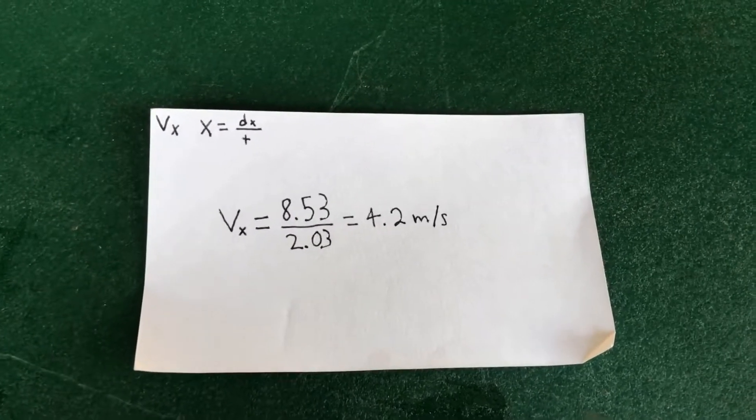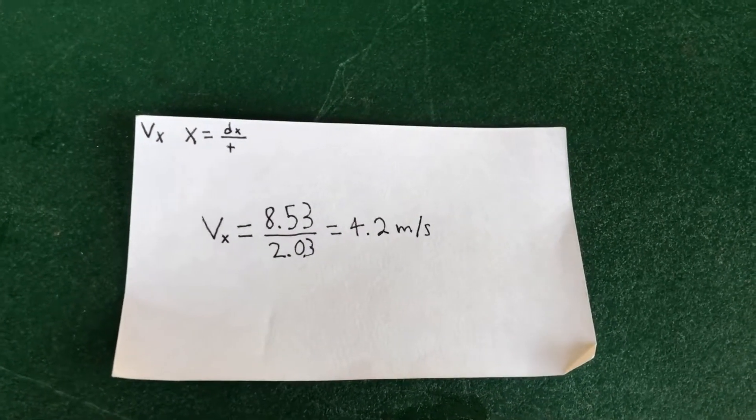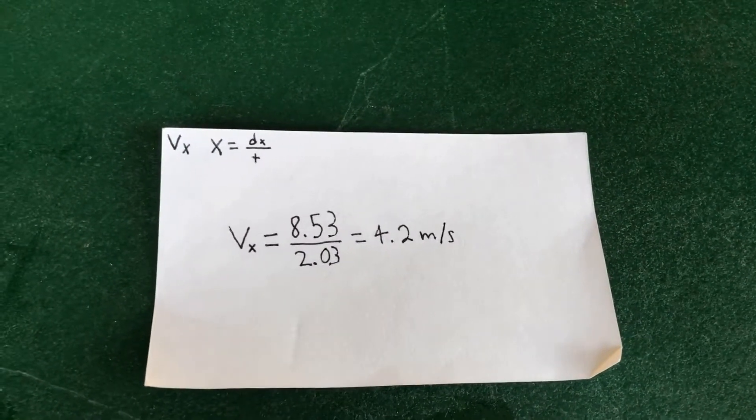To find horizontal velocity, we used the equation distance over time. Once we plugged everything in, we got 4.2 meters per second.